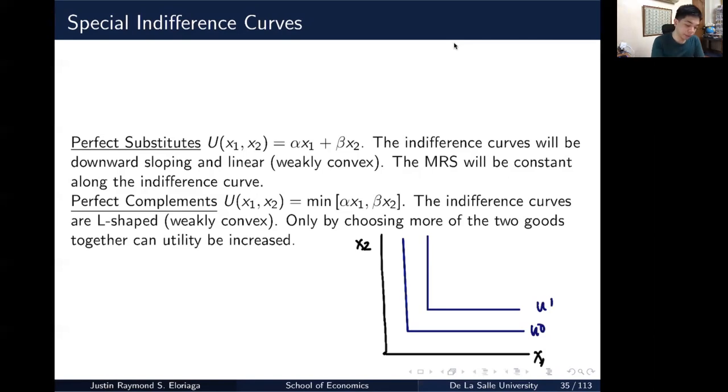So notice that typically if say I have point A here. Point A contains this much of x2, x2a and this much of x1a, right? So in order for me to potentially increase my utility to another level, I need to increase, I can hold this constant say at A, but I could, I need to be able to consume say A prime. I need to be able to consume more of x1. So x1a prime. And I have the same level of here.